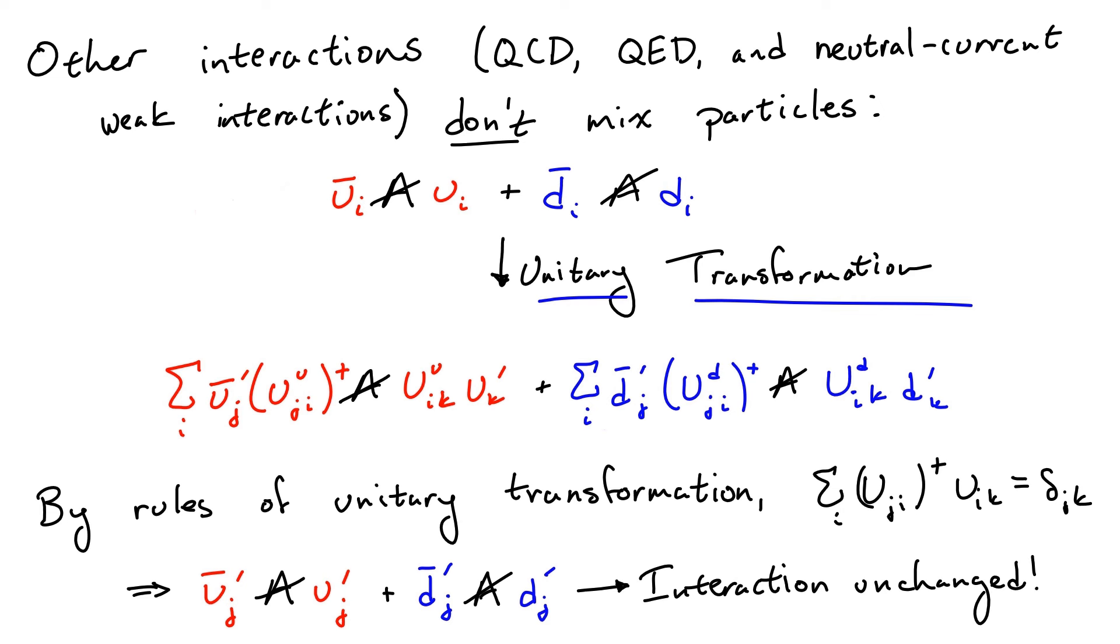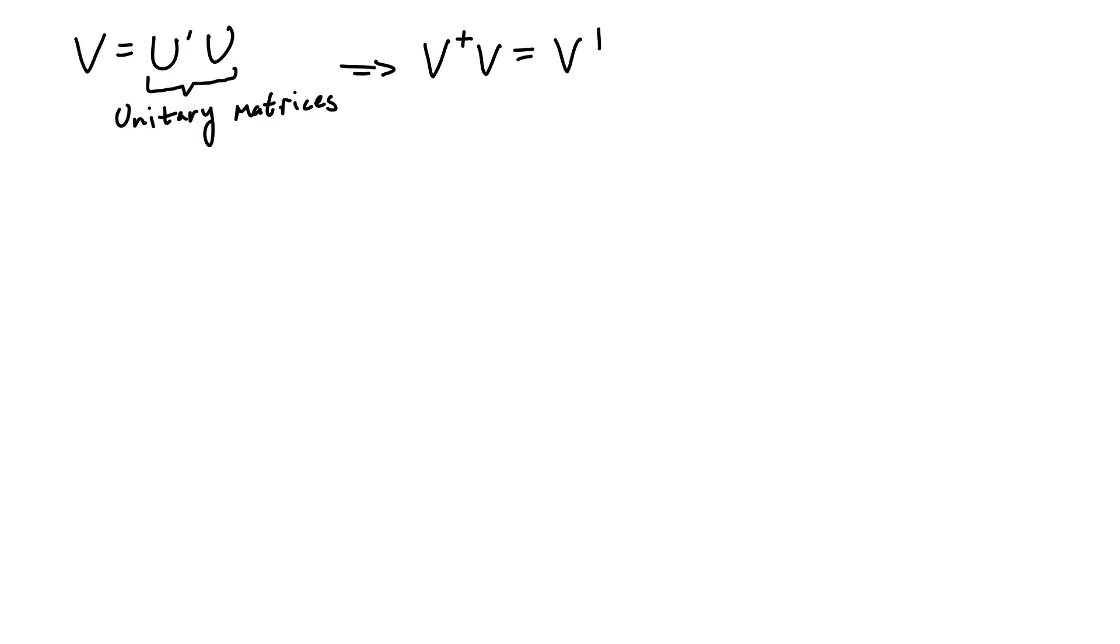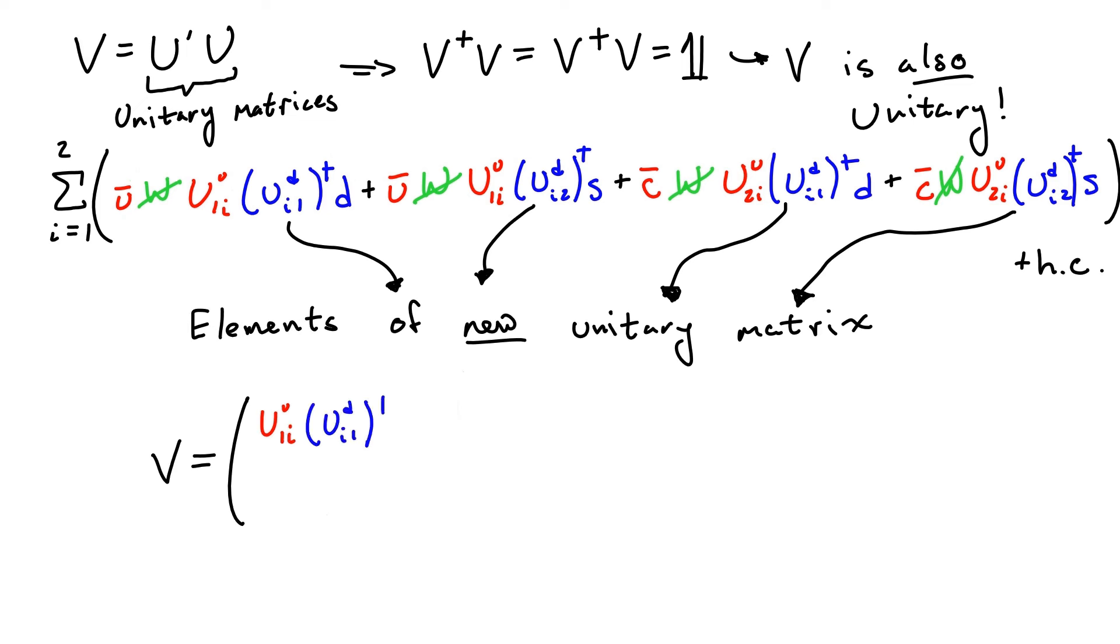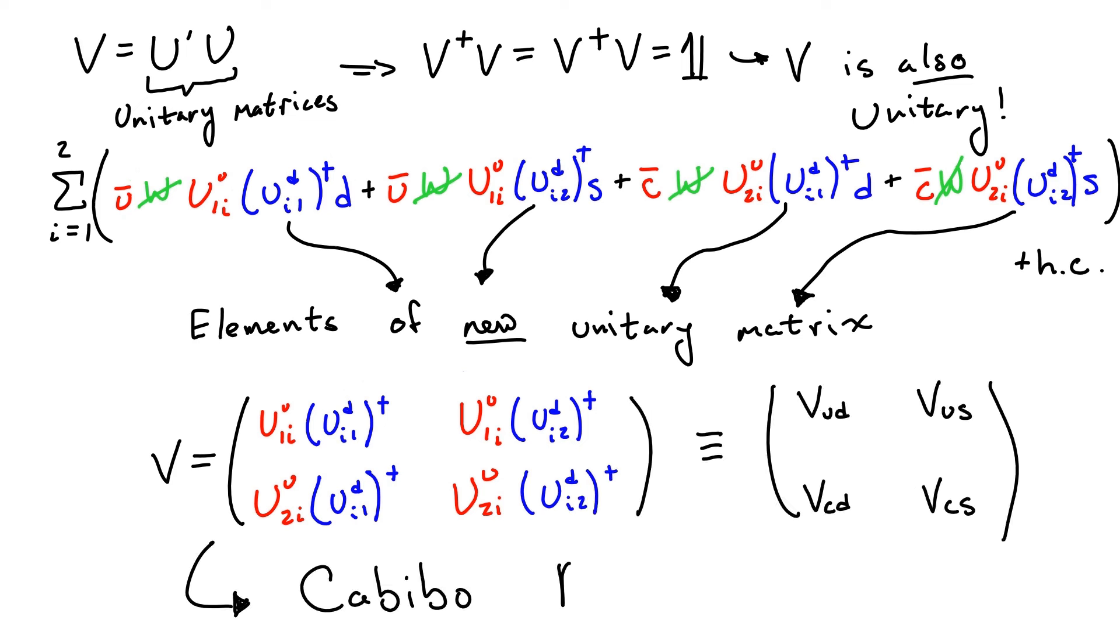Now one interesting property of unitary matrices is that a combination of two such matrices is itself unitary. Meaning, if we multiply by its conjugate, we always get the identity matrix, a matrix with ones on the diagonal and zero everywhere else. This means that when we change our quark states, the resulting couplings to the weak interactions will always be elements of some new unitary matrix, and this two-dimensional version is known as the Cabibbo matrix, named after Nicola Cabibbo, who proposed this mechanism for misaligning the quarks.